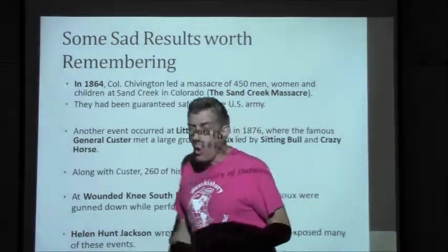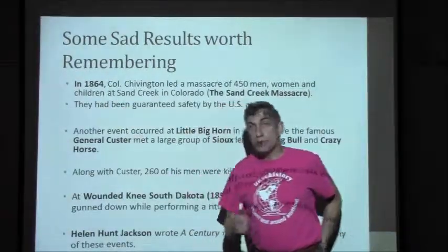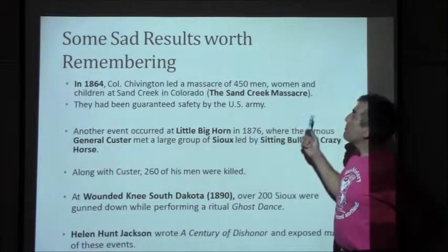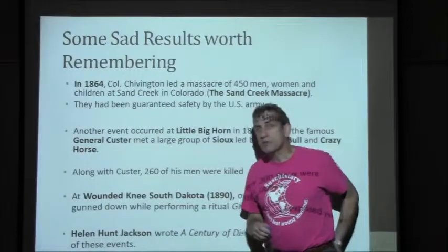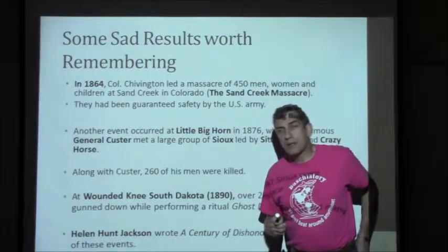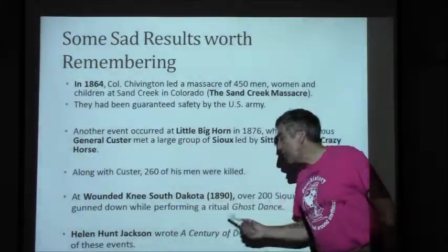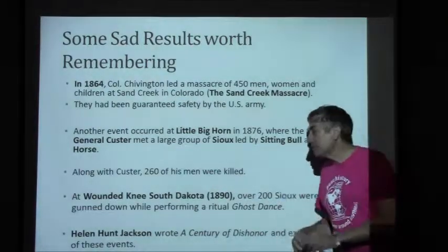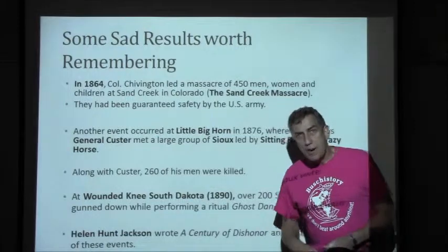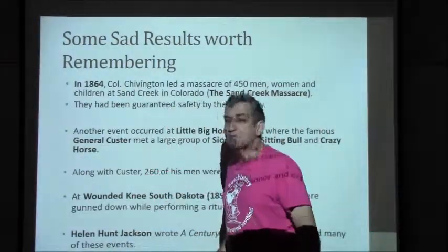There were some sad results of the westward movement and the growth of big business. In 1864, Colonel Chivington led a massacre of 450 men, women, and children at Sand Creek in Colorado. Then Little Bighorn in 1876 — the famous defeat of General Custer and his troops by the Sioux Indians when they tried to ambush them; 260 of Custer's men were killed. Then Wounded Knee, South Dakota, in 1890 — during the Ghost Dance, over 200 Sioux were gunned down while performing that ritual. Much of this is cataloged by writer Helen Hunt Jackson in A Century of Dishonor, which exposed how Native Americans were treated throughout the 19th century and how we took advantage of them.